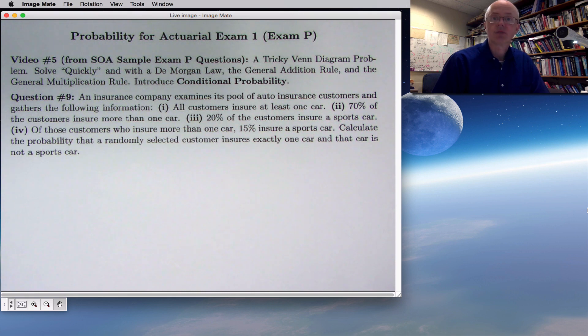Hi, this is video number 5 on probability for actuarial exam 1, also called exam P. You can see we're doing question 9 in this video. In video number 4 we did question 8, so we are not doing these problems necessarily directly in order, and in fact we might go backwards sometimes and do question 6 in a future video. Probably also not going to do every single sample question, I'm going to pick and choose to a certain degree.